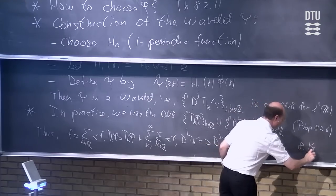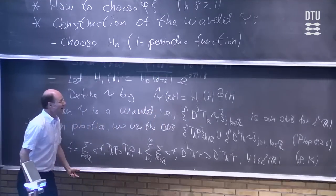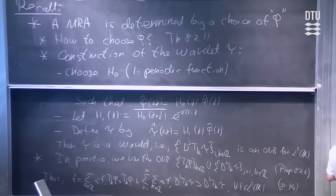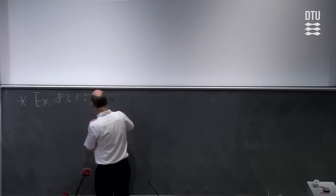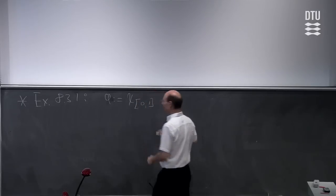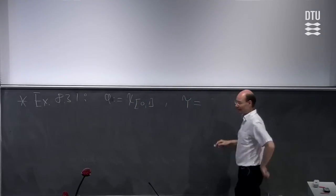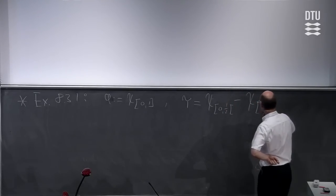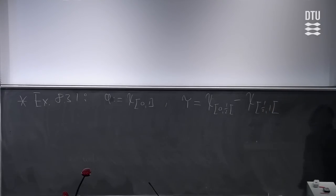What we did last time was to apply this in a very special case — a particular example. We took phi to be the characteristic function for the interval [0,1], and it turned out that the corresponding wavelet is the characteristic function for the interval [0, 1/2] minus the characteristic function for the interval [1/2, 1]. This is the Haar wavelet.